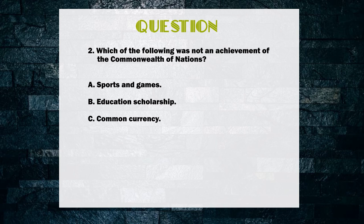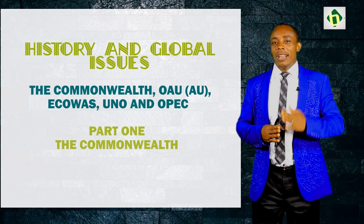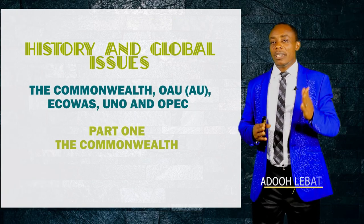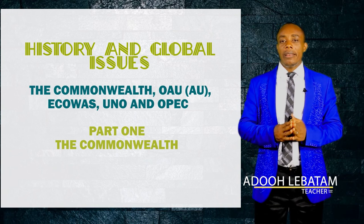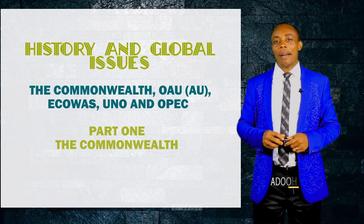Question 2: Which of the following was not an achievement of the Commonwealth of Nations? A. Sports and games. B. Education scholarship. Or C. Common currency. The correct answer is C — common currency — as this has not been achieved by the Commonwealth. I hope you can now explain how the Commonwealth meets Nigeria's foreign policy objectives and examine the aims and objectives of the Commonwealth. Thank you and bye for now.